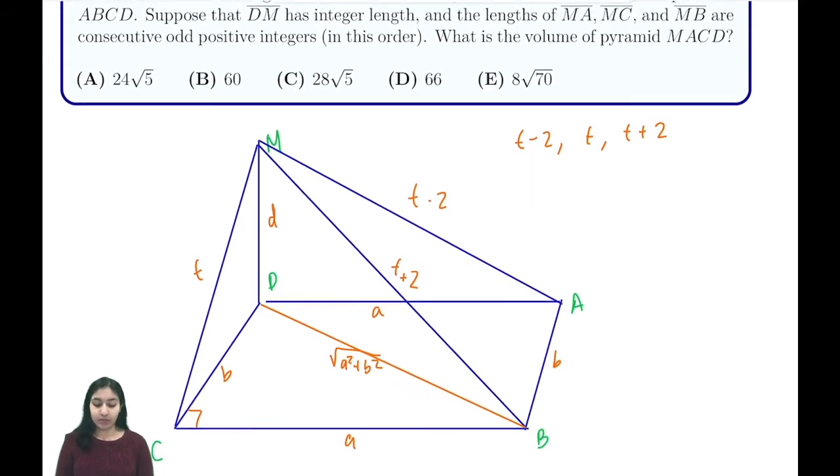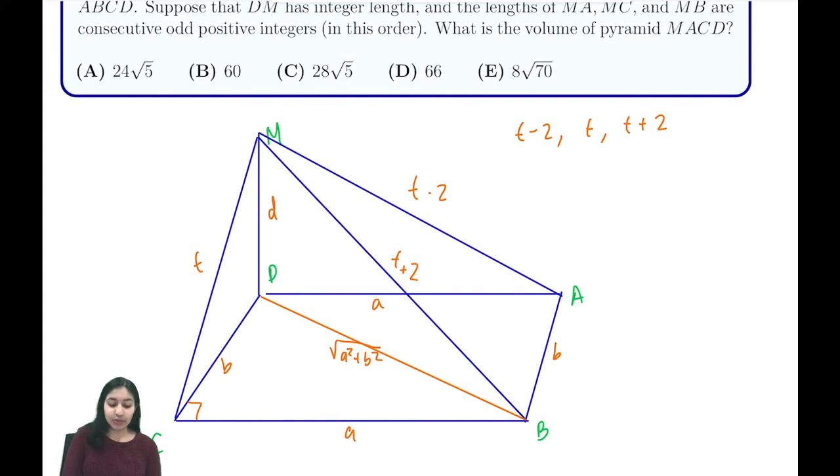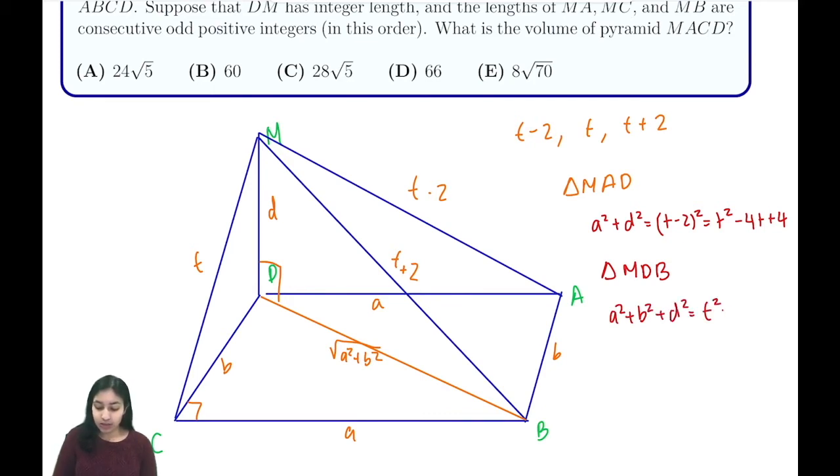Now that we have all of these different lengths, we can write out some equations. Because we know DM is perpendicular, we have that when we look at triangle MAD, we get a² + d² = (t-2)² which is t² - 4t + 4. If we look at triangle MDB, we'll see that a² + b² + d² equals (t+2)² which is t² + 4t + 4.